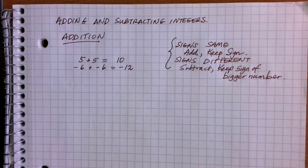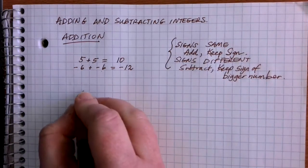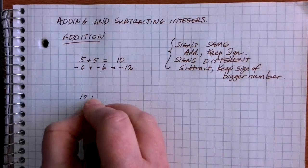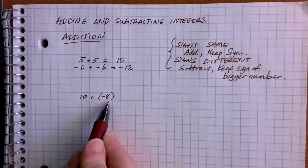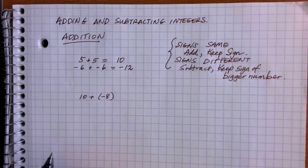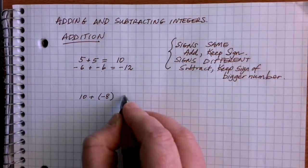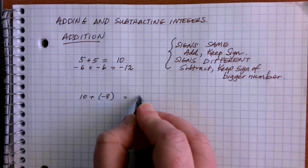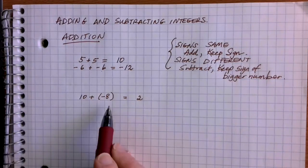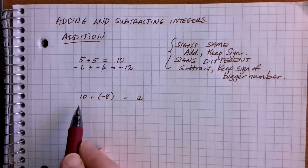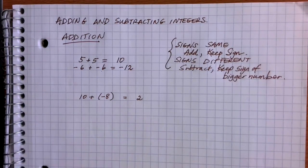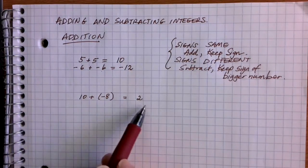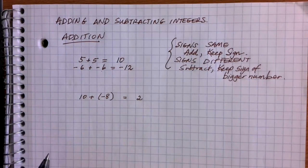Let's look at a couple of examples. Suppose we have 10 plus negative 8. In this case, our signs are different — the 10 is positive and the 8 is negative — so we're going to subtract those numbers. 10 minus 8 gives us 2, and we keep the sign of the bigger value. We had 10 positives and only 8 negatives, so we end up with more positive values, and our answer is positive 2.